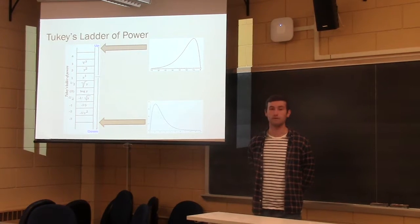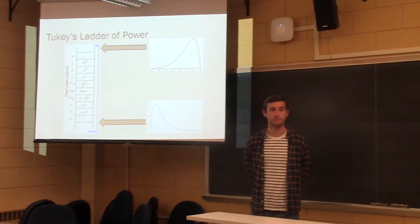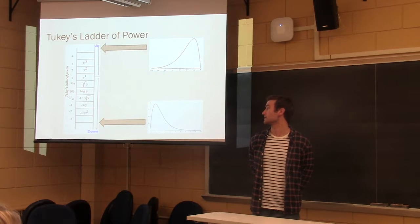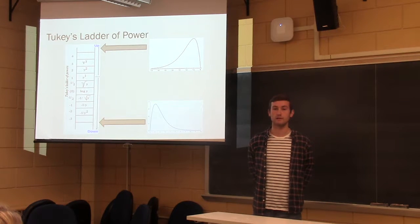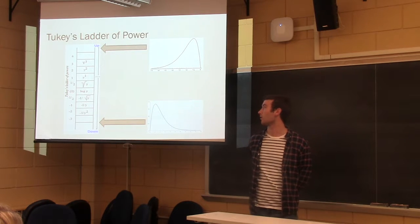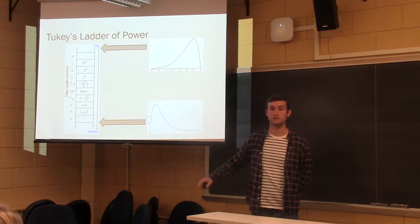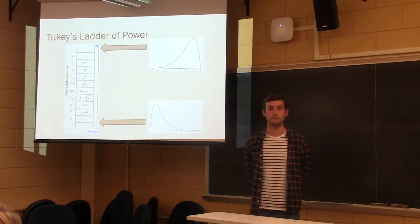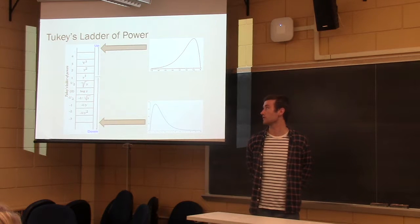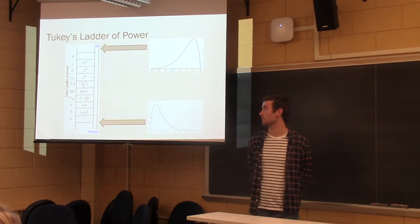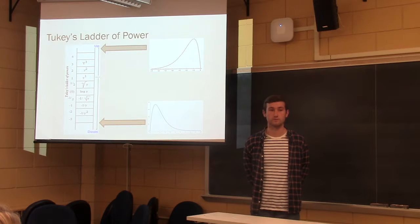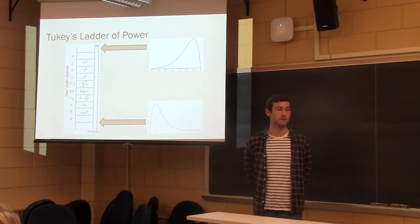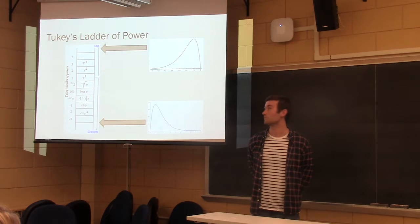And so to take care of transformations of variables that are skewed, you can use Tukey's Ladder of Power. You start in the middle, which is Y to the 1. If the distribution is skewed right, you move down the ladder. Those movements are first the square root of the variable, next the log of the variable, and then the inverse square root, et cetera. If you have a lot of small outliers, you move up the ladder.